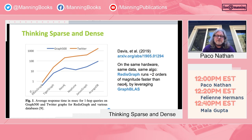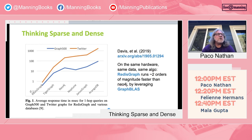Tim Davis did a paper a couple of years ago comparing Neo4j — which is really popular as a graph database — to RedisGraph. On the same hardware, same data, same algorithm, RedisGraph runs approximately two orders of magnitude faster than Neo4j, because RedisGraph is using something called GraphBLAS — doing the dense thinking and the transformations from sparse to dense and back correctly. Neo4j, not so much.